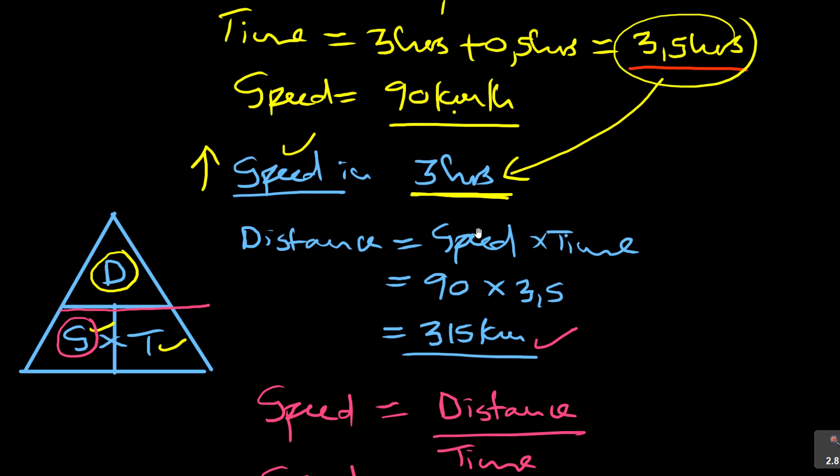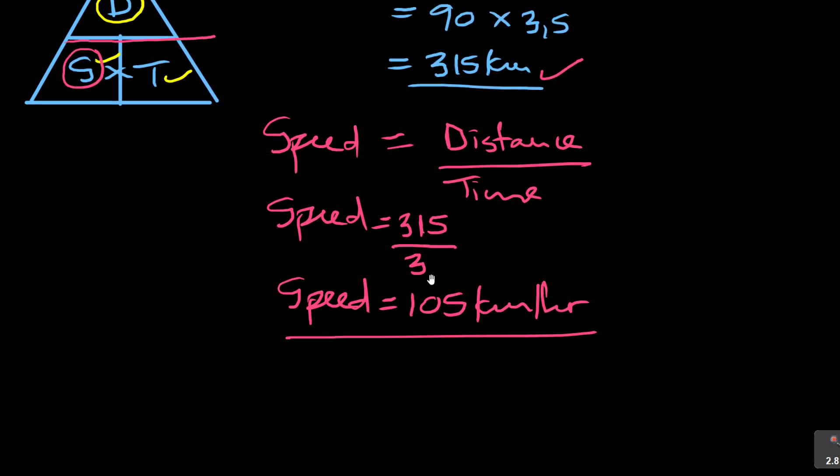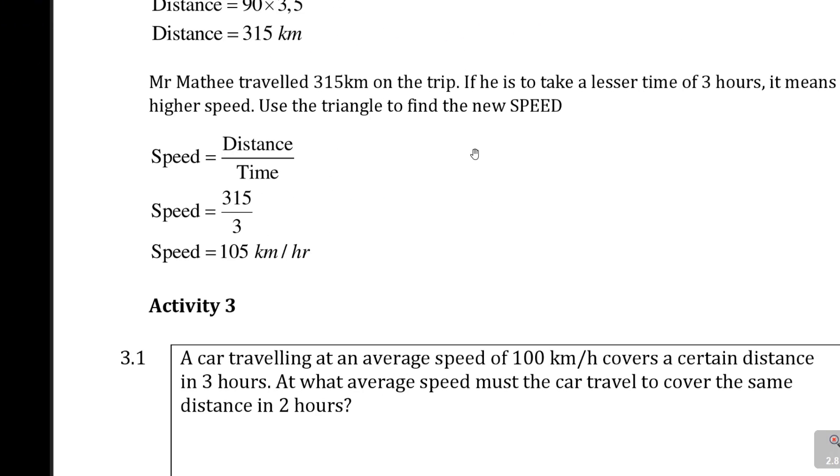So 105 kilometers per hour. He must now travel at a speed of 105 kilometers per hour. Remember the previous speed was 90 kilometers. From 90, he must travel at a higher speed if he is to travel in three hours. That's how you work around this.